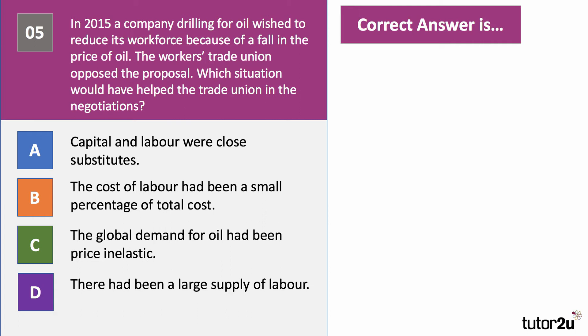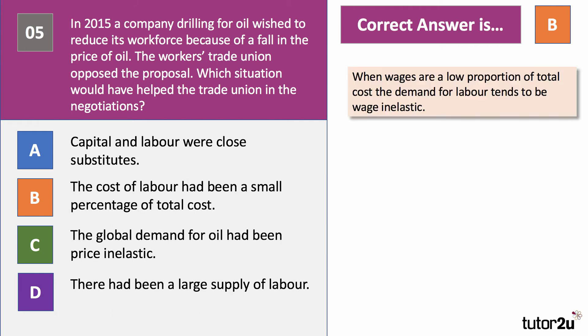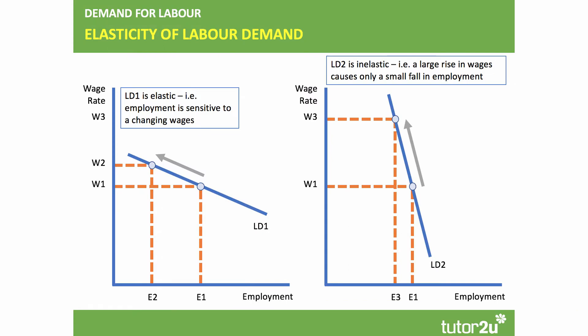What would have helped the unions try to prevent job losses? The answer is B: that the cost of labour had been a small proportion of total cost. When wages are low as a share of total cost, the demand for labour tends to be wage inelastic. The oil companies' profits aren't hugely dependent on labour costs — they're more dependent on the price of oil. When wage costs are a small percentage of total costs, the demand for labour tends to be fairly inelastic.